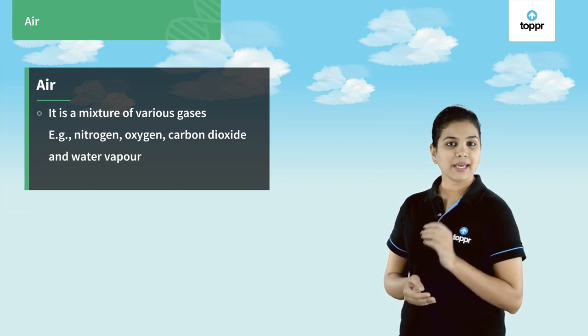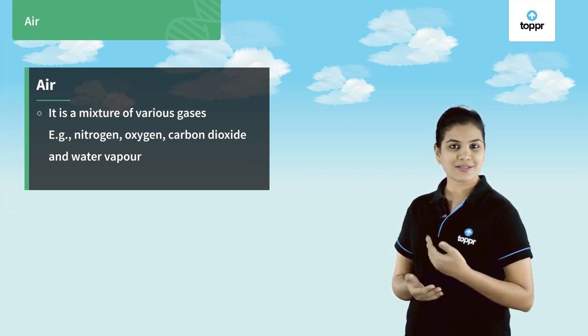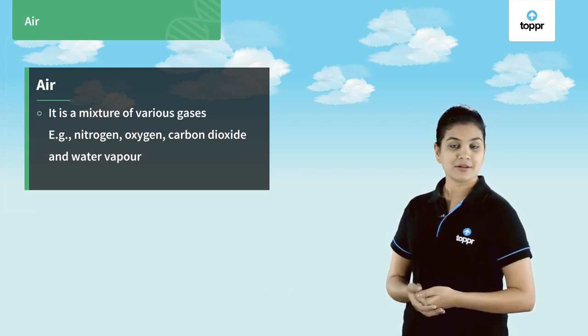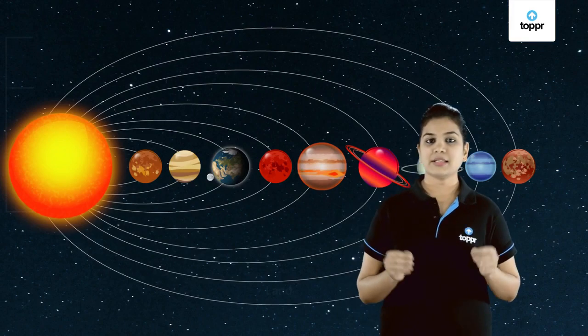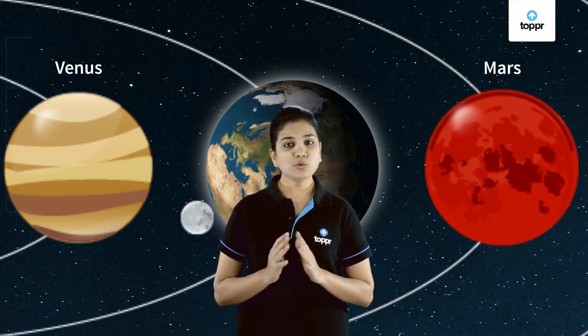Talking about air, we all know that air is a mixture of various gases such as nitrogen, oxygen, carbon dioxide, water vapors, etc. It is interesting to note that even the composition of air is the result of life on earth. Because if you notice planets such as Venus and Mars where no life exists, the major composition of the atmosphere is found to be carbon dioxide — in fact, around 95 to 97 percentage.